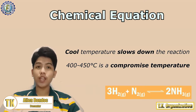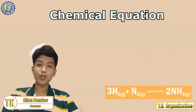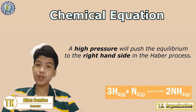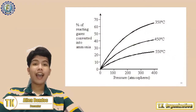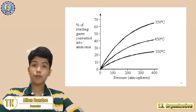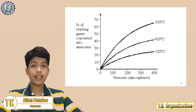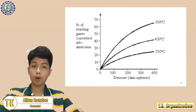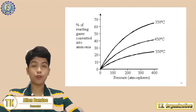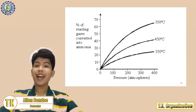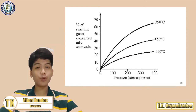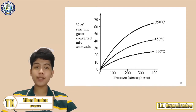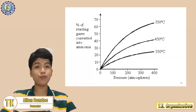The iron catalyst also increases the rate of the reaction. The equilibrium is also affected by pressure — a high pressure will push the equilibrium to the right in the Haber process. As you can see from the graph, the percentage of ammonia is highest at low temperature, but a low temperature slows the rate. If we raise the temperature, the rate increases but the yield decreases, and high temperatures require more energy. Therefore, we use a compromised temperature of 400 to 450 degrees Celsius. At very high pressures, the percentage of ammonia also rises; however, it is extremely expensive and dangerous to work with very high pressures. As a result, we use a compromised pressure of 200 atm.